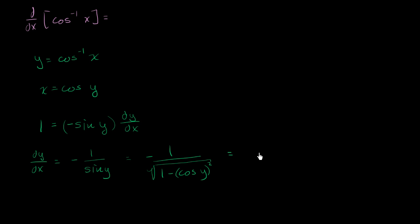So this is equal to negative 1 over the square root of 1 minus, instead of writing cosine y, we could write 1 minus x squared. So there you have it.